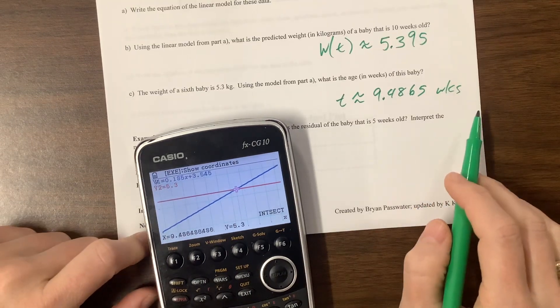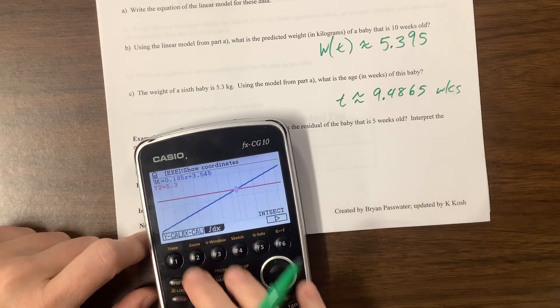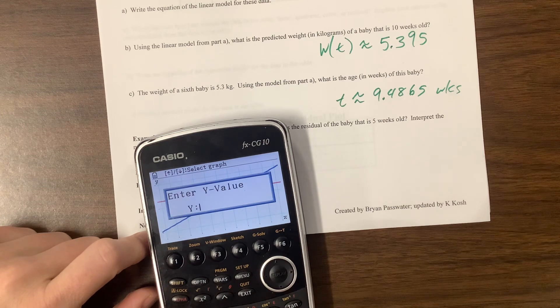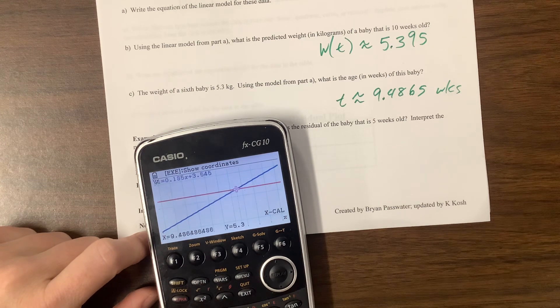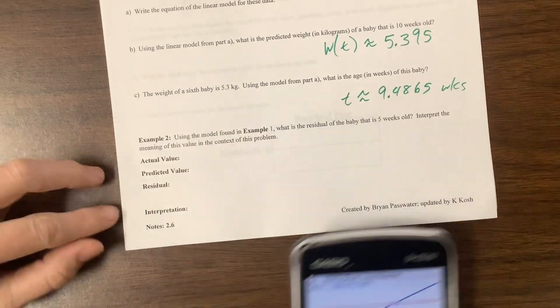And so the other option would have been, if you're here, g-solve, you could come over x-cal. And so we want to do that line, it'll flash, and you tell it yes. So 5.3. And that should give us the same answer. There's more than one way to attack these problems.